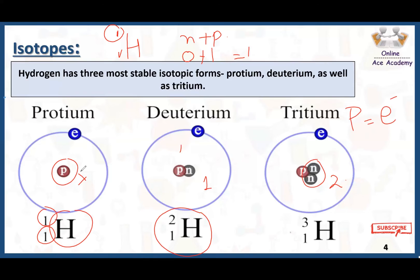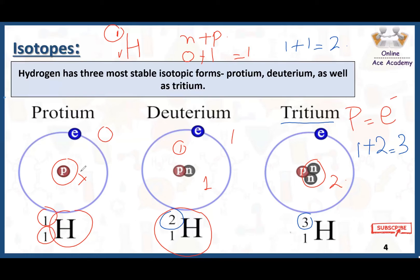In deuterium there is one proton, but the mass number is two, meaning there is one proton and one neutron. In tritium, the mass number is three and the number of protons is one, so there are two neutrons, making the mass number equal to three. In summary: protium has zero neutrons, deuterium has one neutron, and tritium has two neutrons. Their atomic numbers are all the same, but they differ in mass number — one, two, and three respectively — specifically differing in the number of neutrons.